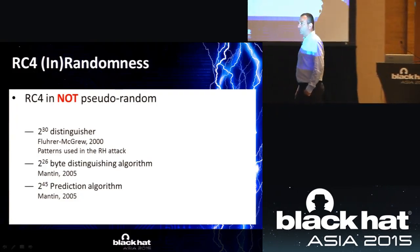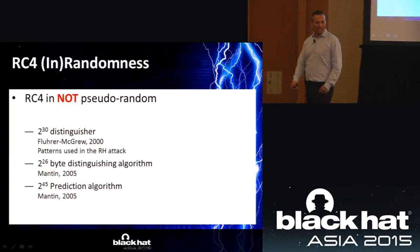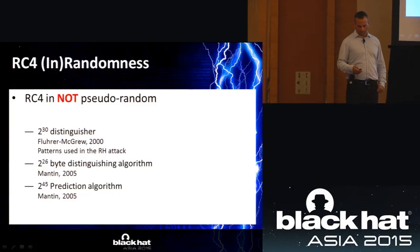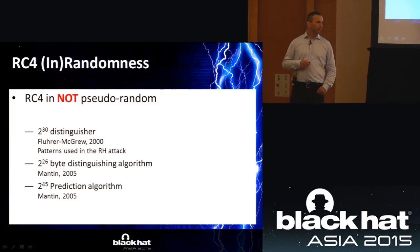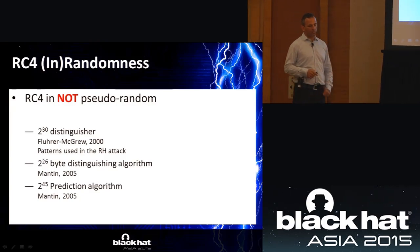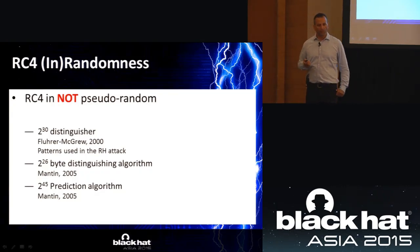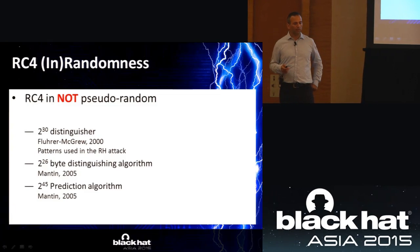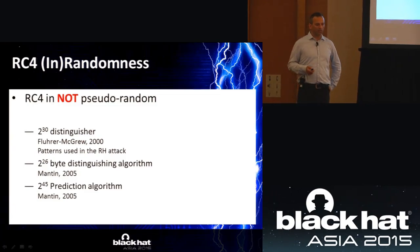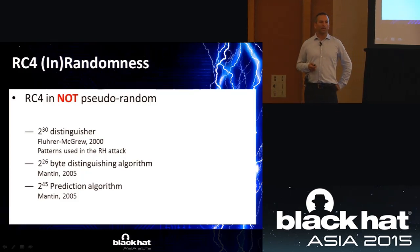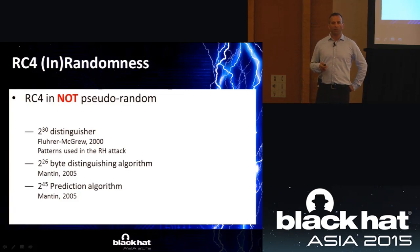However, RC4 is not truly pseudorandom — it's supposed to be, but it is not. Since the year 2000, a distinguisher of RC4 was published by Fluhrer and Mantin. These biases were used by an attack on RC4 in TLS about two years ago. There is also a distinguisher of 2^26, which is essentially 64 million bytes, which I published in 2005. And there is a prediction algorithm that in one event out of 2^45 bytes can predict what the next bytes are going to be.